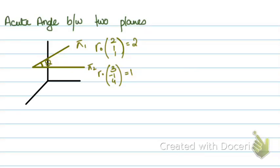So how do you find an acute angle between two planes? I have plane 1 over here: r·(2,1,1) = 2, that's this one. And I have another plane equation: r·(3,-1,4) = 1.